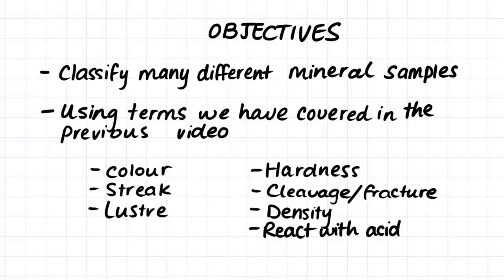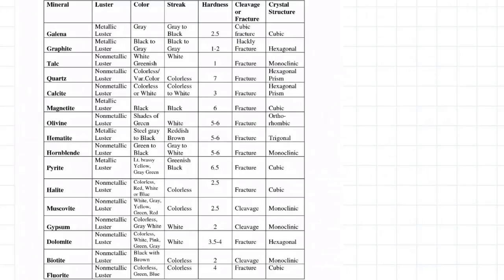Hi, guys. The objective of this video is to classify a whole load of different mineral samples. In this video, we'll be using all the properties we covered in the previous video — properties such as color, streak, luster, hardness, cleavage and fracture, density, and whether the mineral will react with acid. If you haven't watched the video just prior to this one, I'd maybe suggest you go and watch that now. In this video, we're going to use this table quite a lot. This table summarizes all the properties of the main different types of minerals.